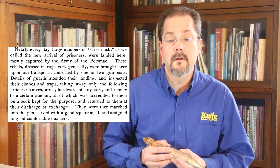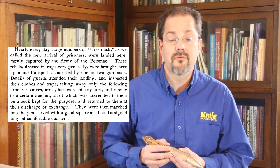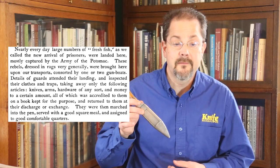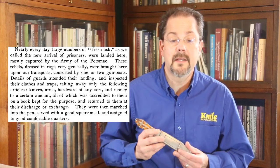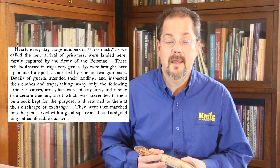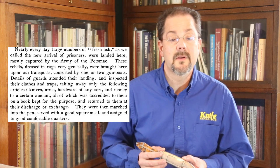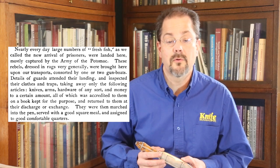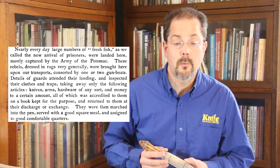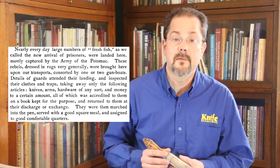These rebels, dressed in rags very generally, were brought here upon our transports, escorted by one or two gunboats. Details of guards attended their landing and inspected their clothes and traps, taking away only the following articles: knives, arms, hardware of any sort, and money to a certain amount, all of which was accredited to them on a book kept for the purpose and returned to them at their discharge or exchange. They were then marched into the pen, served a good square meal, and assigned to good comfortable quarters.